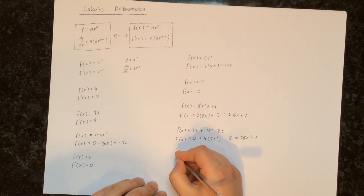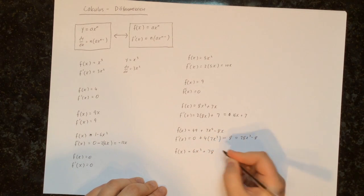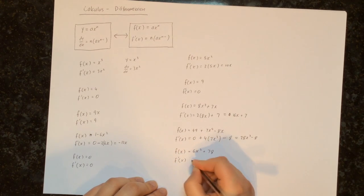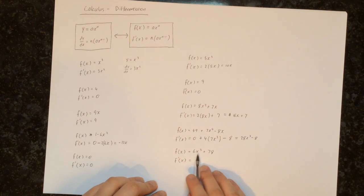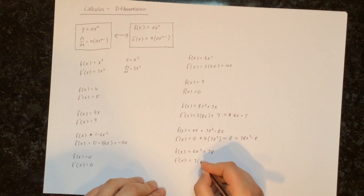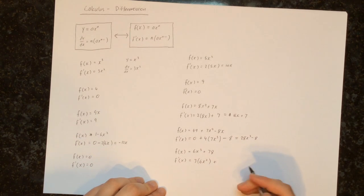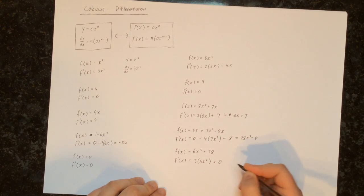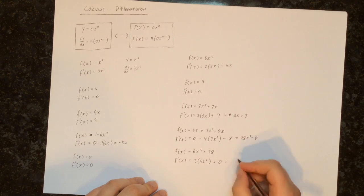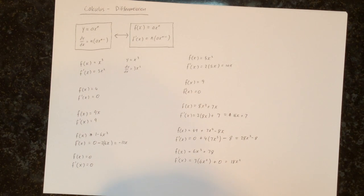Finally, let's try f of x equals 6x cubed plus 78. We differentiate each term independently. For 6x cubed, we multiply by the power — that's 3 — and reduce the power by 1 down to 2. For 78, it's just a number so its derivative is 0. So the result is 3 times 6, which is 18x squared. In this video we revised previous concepts with new notation, and in the next video we'll mix both notation types together.